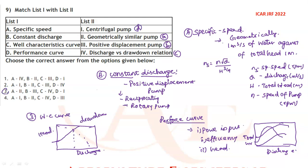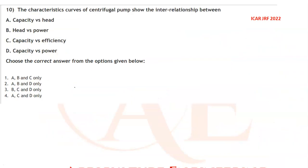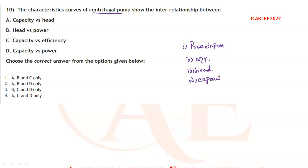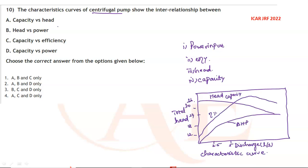For option D, option three is the correct answer. Moving on: the characteristics curves of a centrifugal pump show the interrelationship between power input, efficiency, and head. We discussed head capacity, power, and efficiency — so capacity vs. head, capacity vs. efficiency, and capacity vs. power are all correct. Option four (A, C, D) is the correct answer.